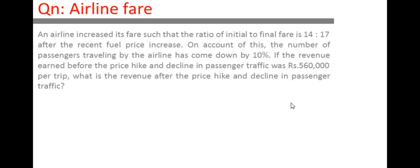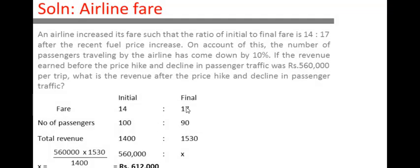It is already given that before the price hike the revenue was 5,60,000. Now I want to find the revenue after the price hike, so I will assume it as X. So to summarize: initial fare 14, final fare 17; passengers 100 and 90; total revenue 1400 and 1530; known value 5,60,000 and unknown value X.